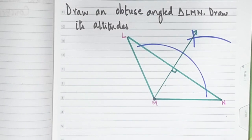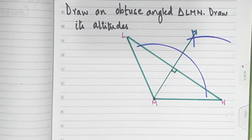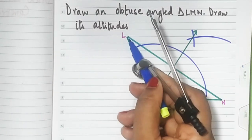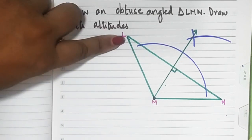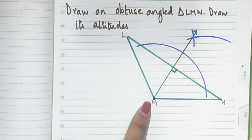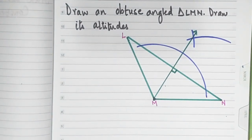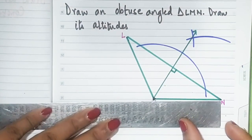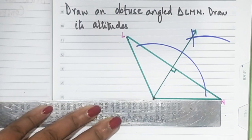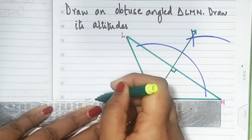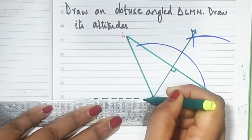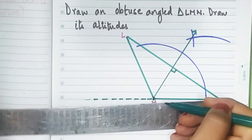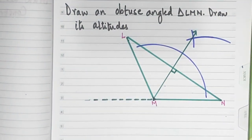Put a 90-degree sign here. Now one is done from M, so the other one has to be from L and the third from N. In order to draw from L, we'll have to extend line MN. I'll draw dotted lines to extend this, so it becomes easier for you to identify the extended line. You'll see many lines, so the dotted lines help identify the extended ones.